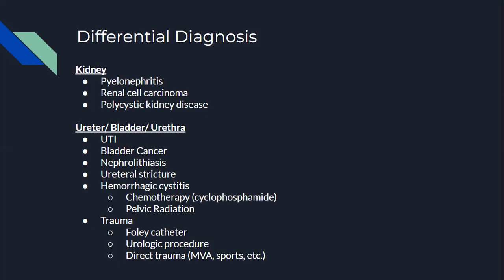Also consider subarachnoid hemorrhages and hemorrhagic cystitis. Continuing at the level of the ureter, bladder, and urethra, you could have UTIs, bladder cancer — look out for patients with painless hematuria who are smokers or ex-smokers — nephrolithiasis with previously mentioned risk factors, urethral strictures from healing of surgery or congenital causes, and hemorrhagic cystitis from cyclophosphamide in patients undergoing chemotherapy or pelvic radiation. For trauma, consider iatrogenic trauma from Foley catheters or a recent urologic procedure, or direct trauma from motor vehicle accidents, motorcycle accidents, sports injuries, or physical altercations.